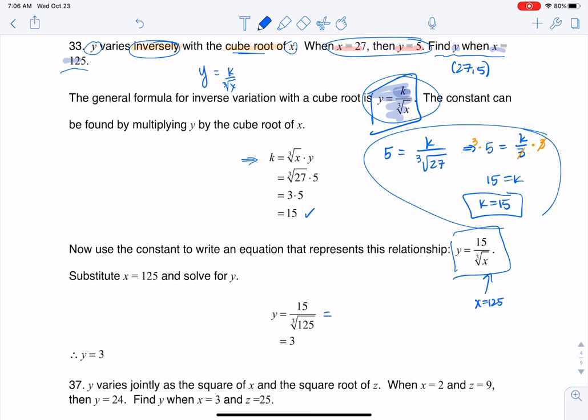So when I do that, I have 15 over the cube root of 125. Well, the cube root of 125 is 5. 15 over 5 is 3. So that's where I get my equation, or I should say my solution, y equals 3.